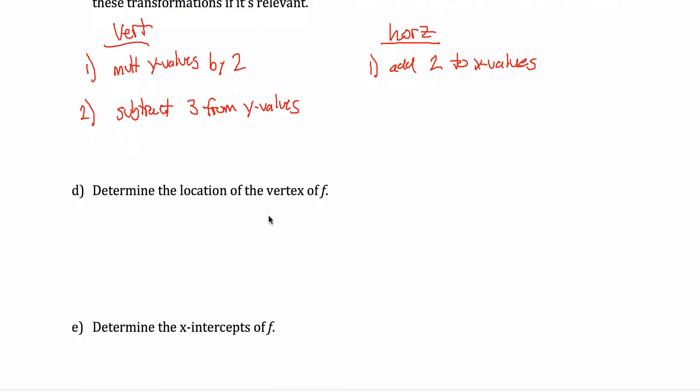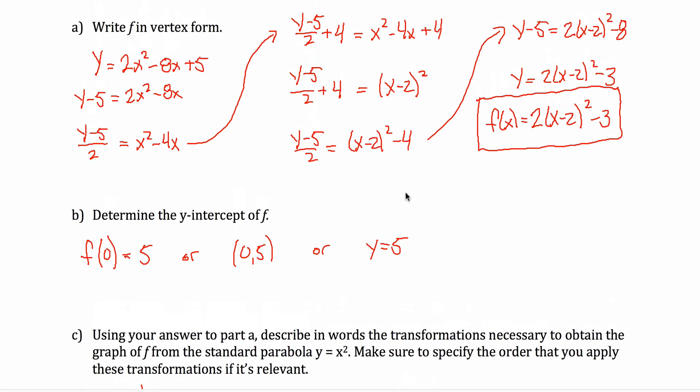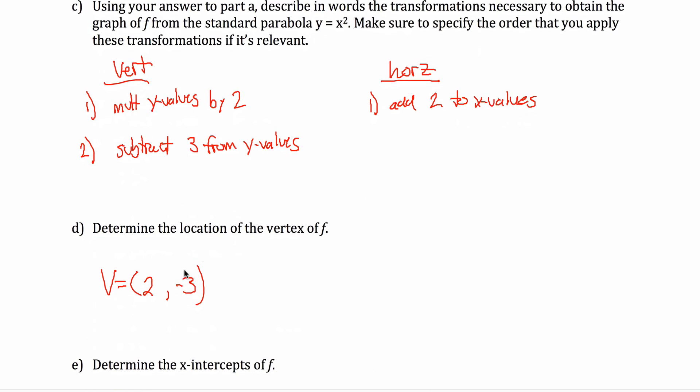Part D, determine the location of the vertex of f. Well, you can get that from these transformations. If you notice that the vertex of y equals x squared starts out at 0, 0. So this first transformation won't do anything. Because the old y value is 0, you multiply by 2, it's still 0. So really, it's just these two transformations right here. I start out at 0, 0. This subtracts 3 from my y values. So the new y coordinate will be negative 3. This adds 2 to my x values. The new x coordinate will be positive 2. The vertex is at 2, negative 3. Or if you want the opposite of this number, comma, this number. 2, negative 3.